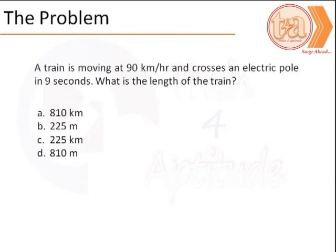Let us now read the problem. A train is moving at 90 km per hour and crosses an electric pole in 9 seconds. What is the length of the train?